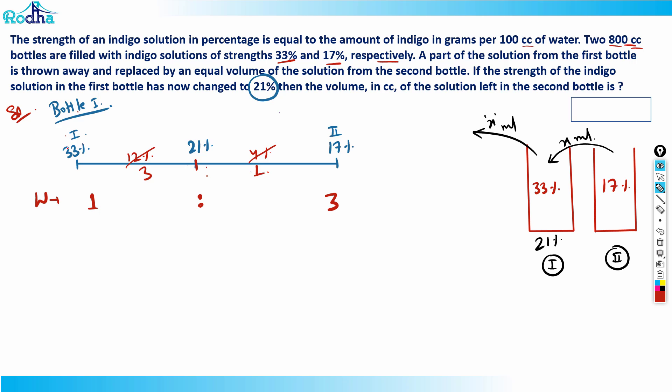Out of 800 cc, if the 33% part is one part, then in the ratio of 1 is to 3, there are four parts total. Four parts is 800, so one part is 200 and three parts is 600. That means in this, the original 33% strength solution is 200 ml or 200 cc, and 600 is the value of x that is transferred here - that's the 17% solution, which is 600.